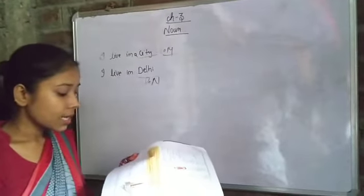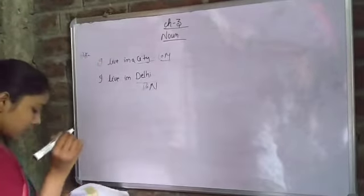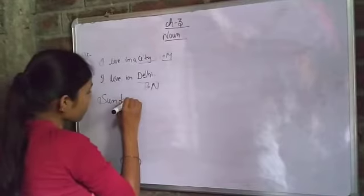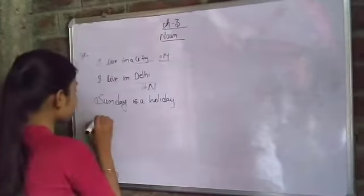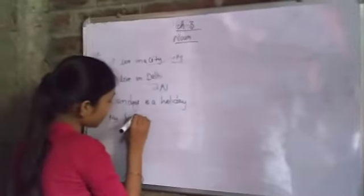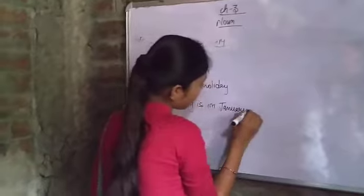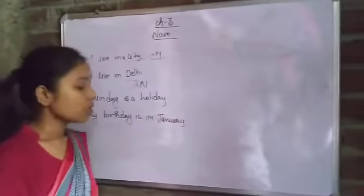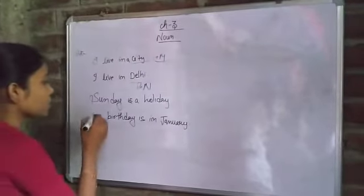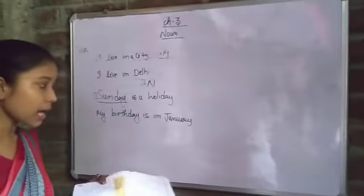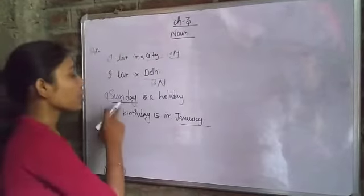Now we have some more examples: 'Sunday is a holiday' and 'My birthday is in January.' The words Sunday and January are special names of a particular day and month respectively. Sunday is a special name of a day from the week, and January is a special name of a month from the year — so they are proper nouns.